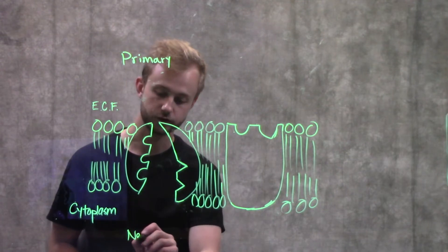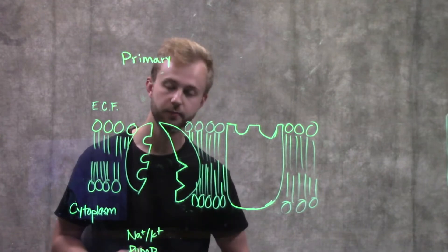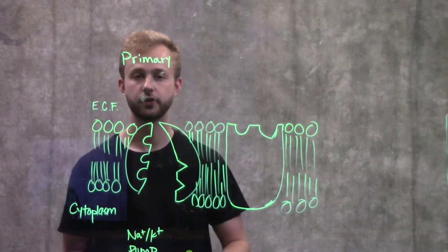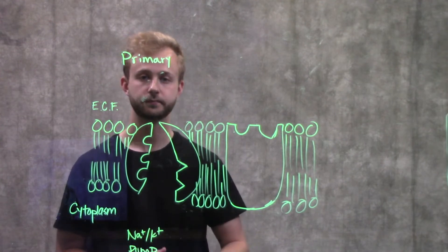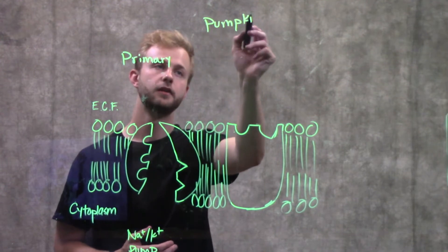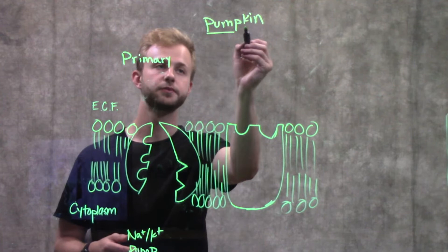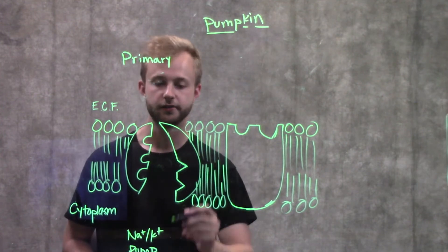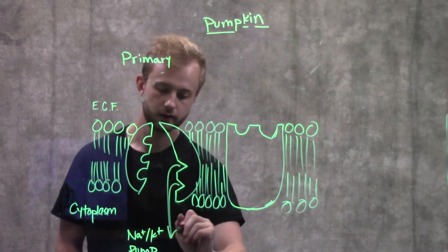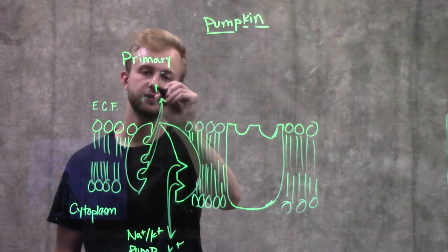So a good example of primary active transport is the sodium-potassium pump. The sodium-potassium pump is going to pump two potassiums into the cell for every three sodiums that it pumps out of the cell. A good way to remember that is pumpkin. If you remember pumpkin, you'll never forget that the sodium-potassium pump pumps K into the cell. So we are going to have two potassiums coming into the cell and then three sodiums going out of the cell.